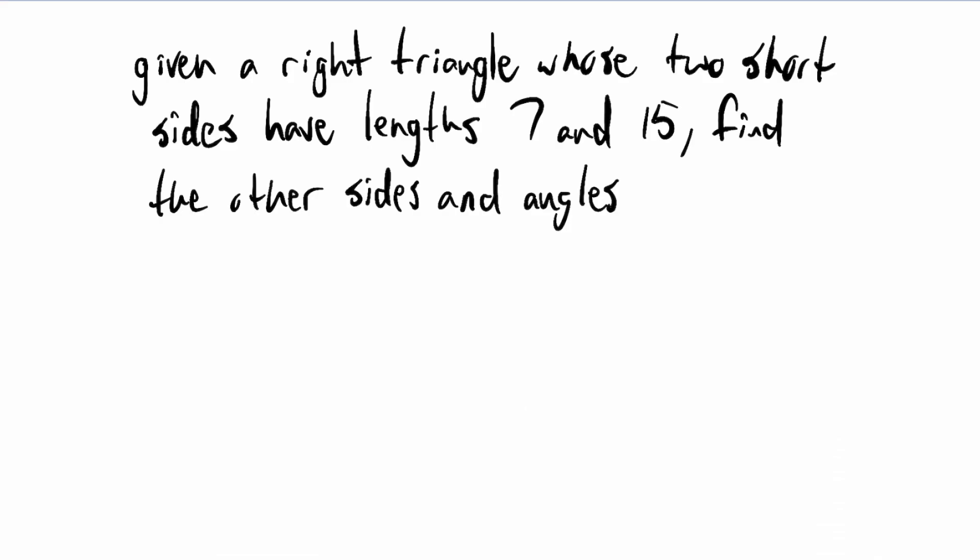In this video, we'll work an example where we solve a right triangle. What it means to solve a triangle is that you find all of the side lengths and angles that are not given up front. We're given a right triangle whose two short sides have lengths 7 and 15, and we're asked to find the other sides and the angles.